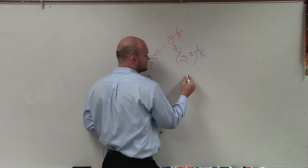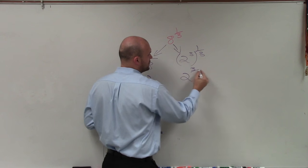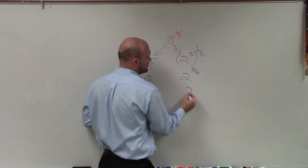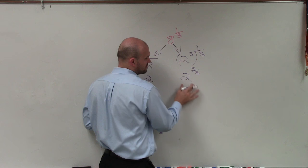well, now using the properties of exponents, I can multiply those, which is 3 over 3. So 2 to the 3 over 3 is just 1. So therefore, I'm just going to equal 2 to the first, which is just 2.